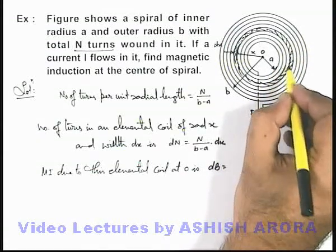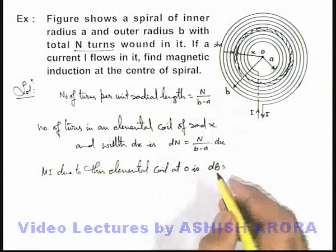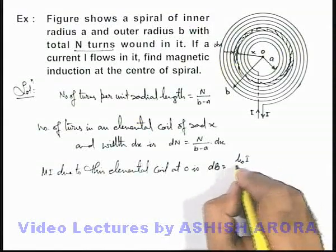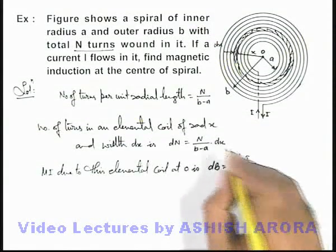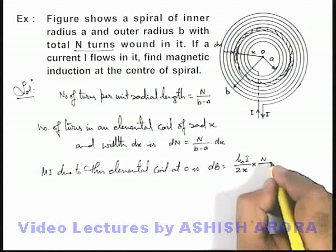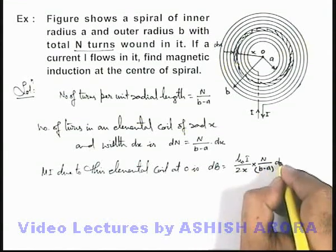Then for this coil of width dx at center o, magnetic induction we can write as μ₀i/(2x) multiplied by number of turns which is N/(b-a) into dx.